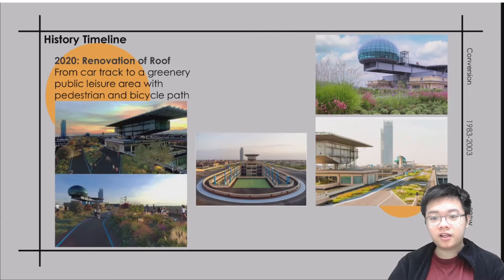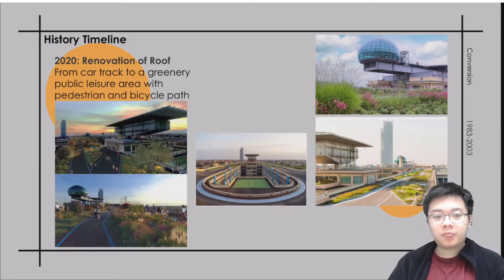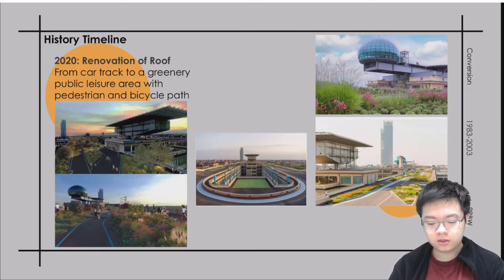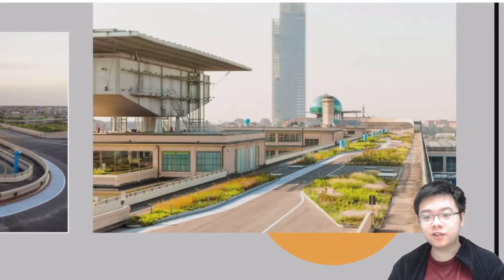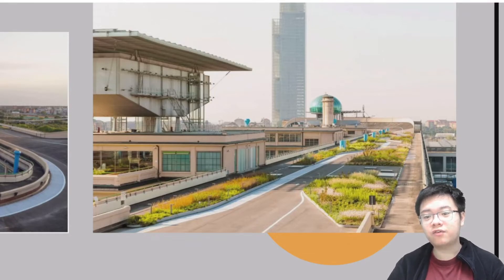Moving to the final phase of the timeline: in 2020 there was a renovation of the roof. In recent times, the roof has been changed into a public leisure area with pedestrian pathways and a bicycle path. The different colors of the tracks indicate different functions or users for this roof garden. From the roof garden, you can easily see the surrounding area because the surrounding buildings are not that tall, so you can enjoy city views from this garden.